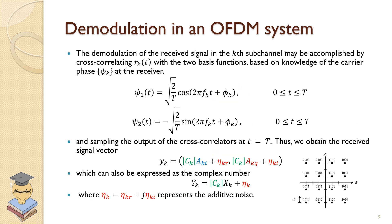So the demodulation process of the received signal goes as follows. The demodulation of the received signal in the kth subchannel may be accomplished by cross correlating Y_k with the basis functions, just like we do in a single carrier system. And when we do the correlation, these are the basis, the cosine and the sine terms. And sampling the output cross correlation at the end of the duration T. Thus, we obtain our received vector. This received vector, of course, will be the transmitted one scaled. And of course, we have the noise, the filtered noise now. And then we can express this complex number in the signal constellation and find the proper demodulated signal.